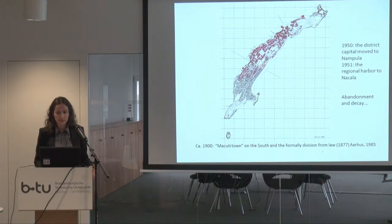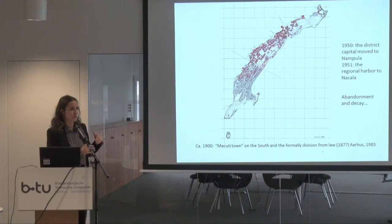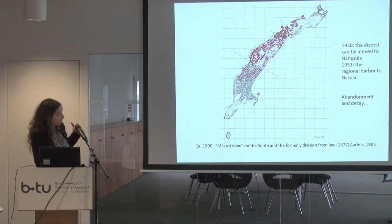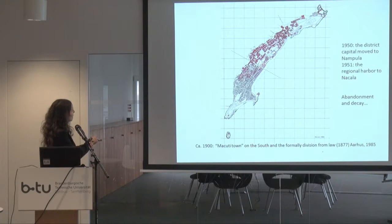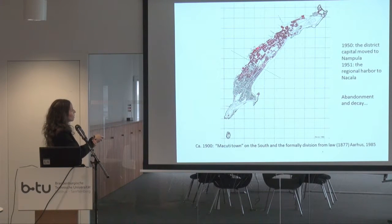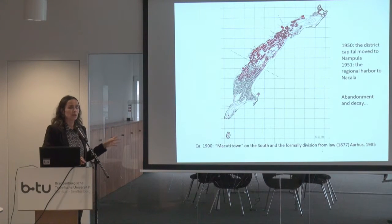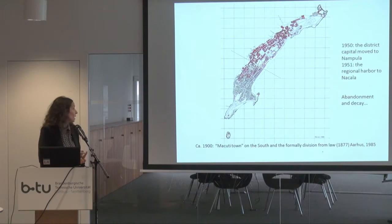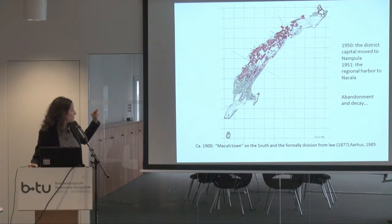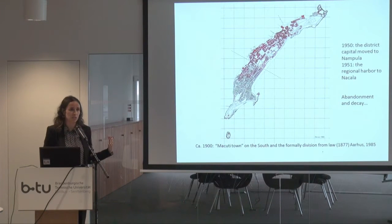At this time, there was the idea to really separate the city in two. The locals were not supposed to settle on the north part of the island, and a big hospital was built marking the separation between the Makuti city and the stone city. The names come from the fact that in the north all construction was with limestone, while in the south — the Makuti town — only local materials were used. This line was part of a regulation that really divided the city visually and socially.